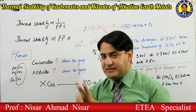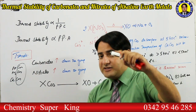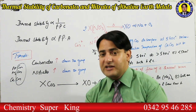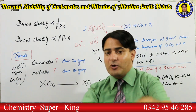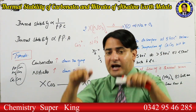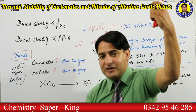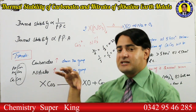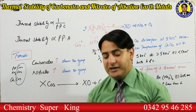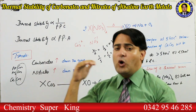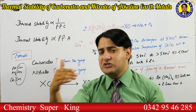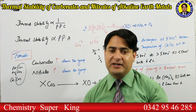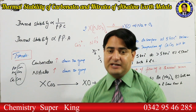Exactly the same is the case for nitrates. Student, look — beryllium nitrate, magnesium nitrate, calcium nitrate — in all of these the nitrate ion is the same. What is changing is the cation. Going down the group, the cation size increases, charge density decreases, polarizing power decreases, and therefore thermal stability increases. So the most thermally stable nitrate among beryllium nitrate, magnesium nitrate, and strontium nitrate would be strontium nitrate.